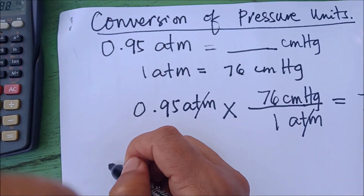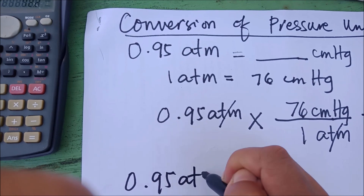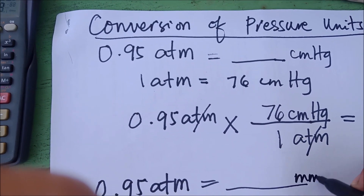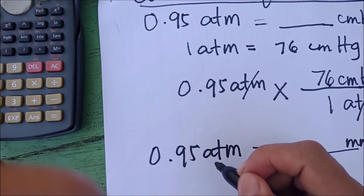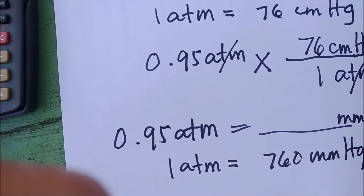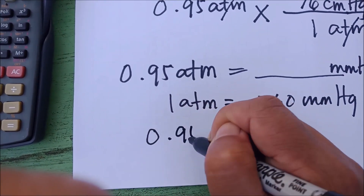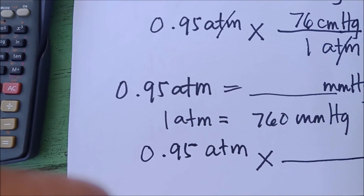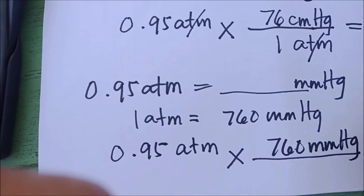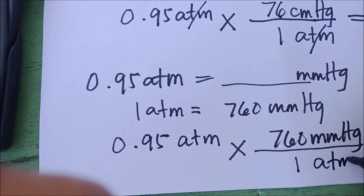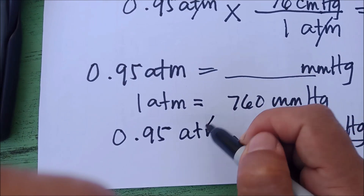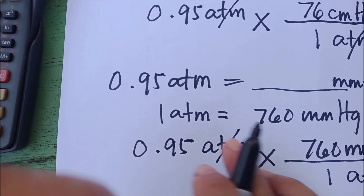Now if you need to convert 0.95 atmosphere into mmHg, the conversion factor you need is 1 atmosphere equals 760 mmHg. Apply that: 0.95 atmosphere times 760 mmHg in the numerator and 1 atmosphere in the denominator. The atmosphere unit in the denominator cancels the atmosphere in the given quantity, leaving mmHg as the unit for your answer.